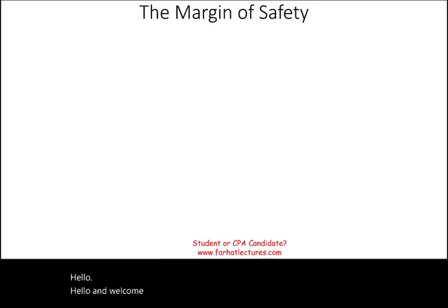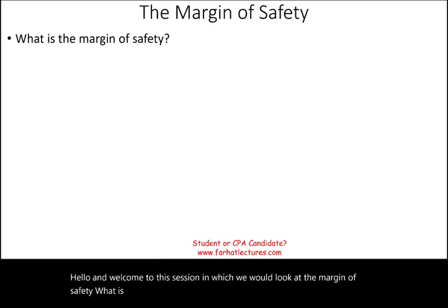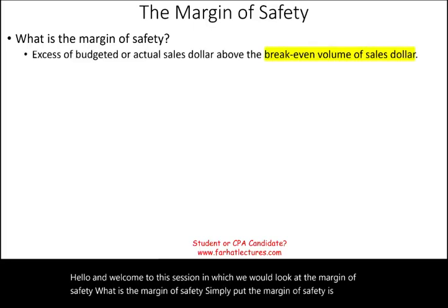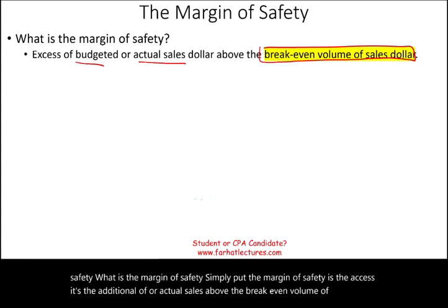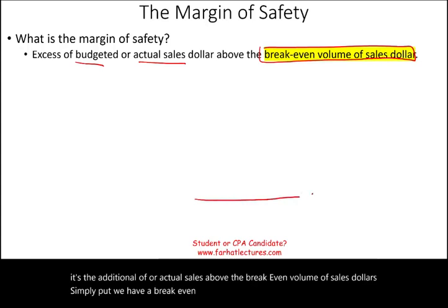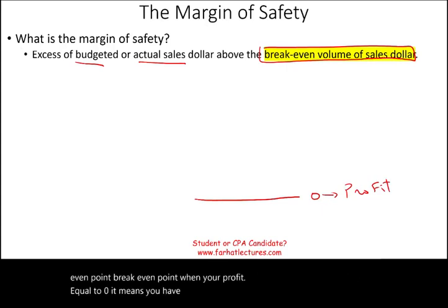Hello and welcome to this session in which we would look at the margin of safety. What is the margin of safety? Simply put, the margin of safety is the excess — it's the additional amount of budgeted or actual sales above the break-even volume of sales dollars. We have a break-even point, and the break-even point is when your profit equals zero. It means you have no profit and no loss. Below zero is a loss, above zero is a profit.